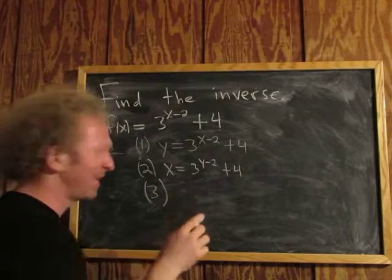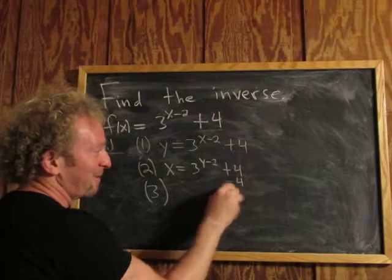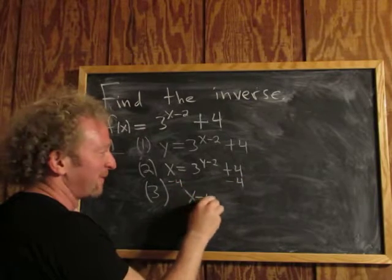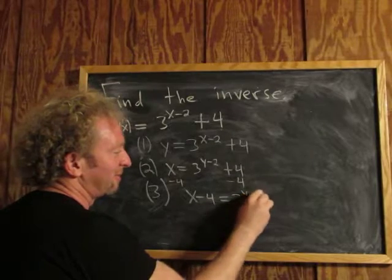Step 3 is to subtract 4 to solve for y. Minus 4, minus 4. So x minus 4 equals 3 to the y minus 2.